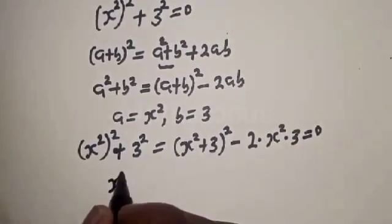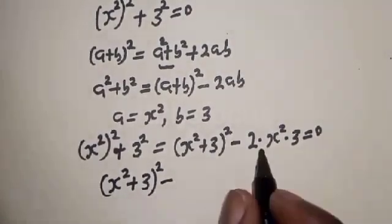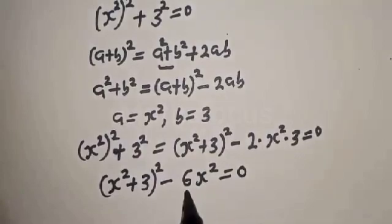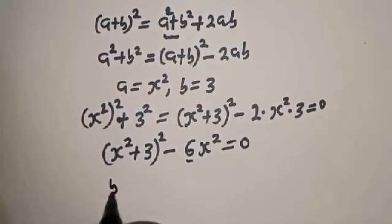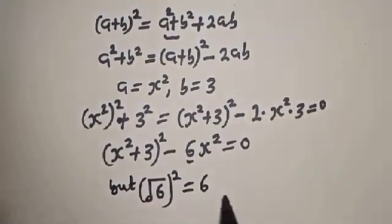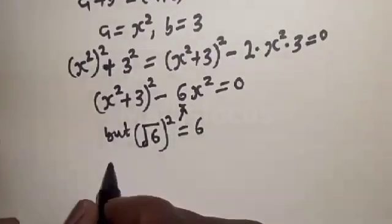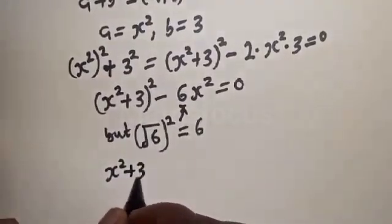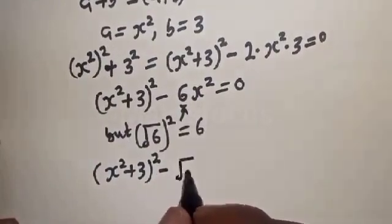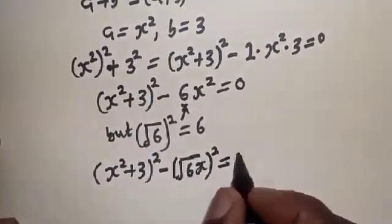So x-squared squared plus 3-squared equals (x-squared plus 3)² minus 2 times 3 times x-squared, which equals (x-squared plus 3)² minus 6x-squared equals 0. Note that 2 times 3 equals 6, so (x-squared plus 3)² minus 6x-squared equals 0. Let's substitute this back.